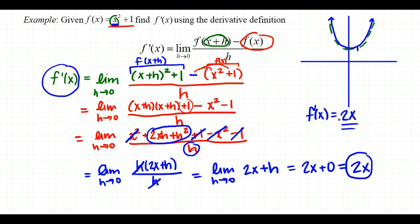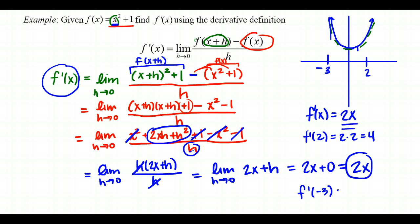We've found the derivative as a function: f prime of x equals 2x, which is a linear function. This means I can use it to find the derivative at any point. Instead of using the long limit definition, I just substitute into 2x. For example, f prime of 2 is 2 times 2, which equals 4. For x equals negative 3, which should give a negative slope, f prime of negative 3 is 2 times negative 3, which equals negative 6.